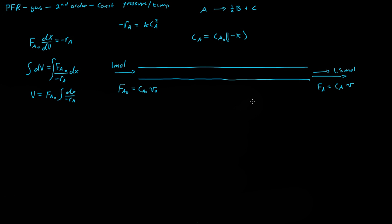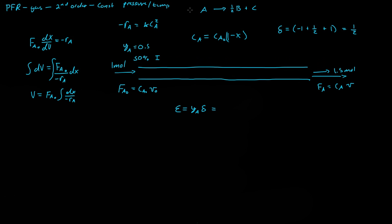To account for this expansion, we define epsilon as the mole fraction of A times delta. Delta equals the net change in moles per mole of A reacted. For this system, delta equals 1 (we go from 1 mole A to ½B + C, net +0.5 per mole A, giving delta = 1 for the unnormalized reaction, resulting in a net gain of 0.5 moles). We also assume yA = 0.5, meaning 50% inerts entering the system.